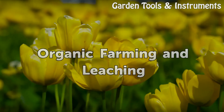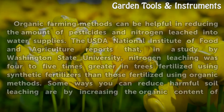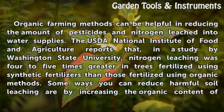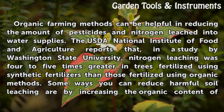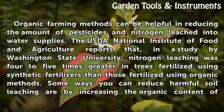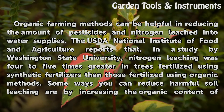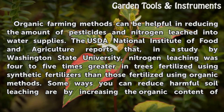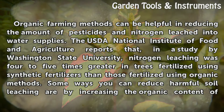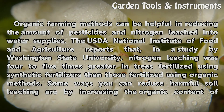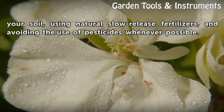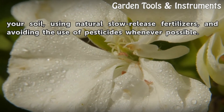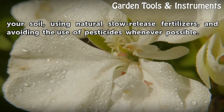Organic farming methods can be helpful in reducing the amount of pesticides and nitrogen leached into water supplies. The USDA National Institute of Food and Agriculture reports that, in a study by Washington State University, nitrogen leaching was four to five times greater in trees fertilized using synthetic fertilizers than those fertilized using organic methods. Some ways you can reduce harmful soil leaching are by increasing the organic content of your soil, using natural slow-release fertilizers, and avoiding the use of pesticides whenever possible.